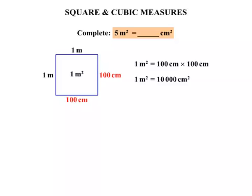So back to that question: 5 square metres. Well, every square metre is 10,000 square centimetres, so we'll end up getting 50,000 square centimetres. So you can see it's a lot different from what a lot of people would have written as being 500.